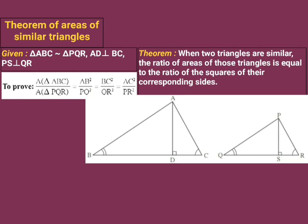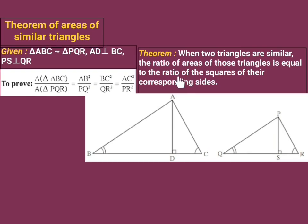The corresponding sides are: AB corresponds to PQ, BC corresponds to QR, and AC corresponds to PR. We want the ratio of the squares of the corresponding sides, so these ratios will be AB² upon PQ², BC² upon QR², and AC² upon PR². Therefore, according to the statement, we have to prove: area of triangle ABC upon area of triangle PQR equals AB² upon PQ² equals BC² upon QR² equals AC² upon PR².